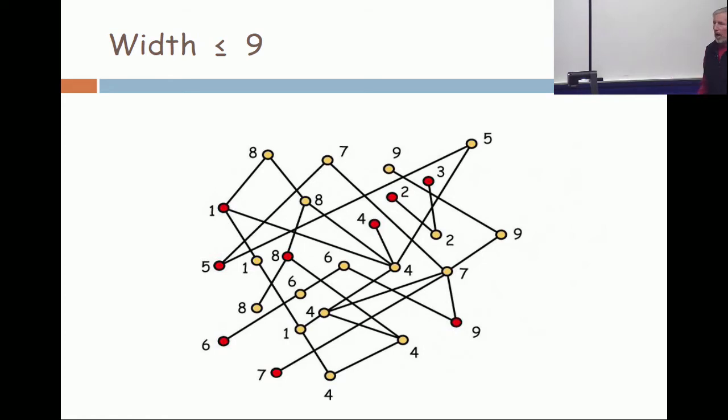So this time, the coloring determines a partition of the poset into nine chains. If there's a partition of the poset into nine chains, then by the pigeonhole principle, there cannot be an anti-chain of size ten.